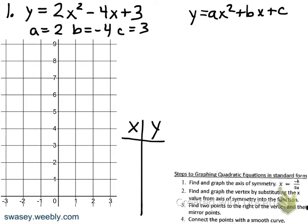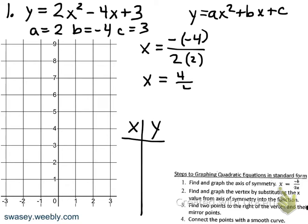The first step is to find and graph the axis of symmetry. The axis of symmetry is always x equals negative b over 2a. The negative is from the formula, then b happens to be negative 4, over 2 times a which is 2. The opposite of negative 4 is positive 4; 2 times 2 is 4; 4 divided by 4 is 1. So our axis of symmetry is x equals 1 — it's a vertical line that goes through our vertex on these parabolas.